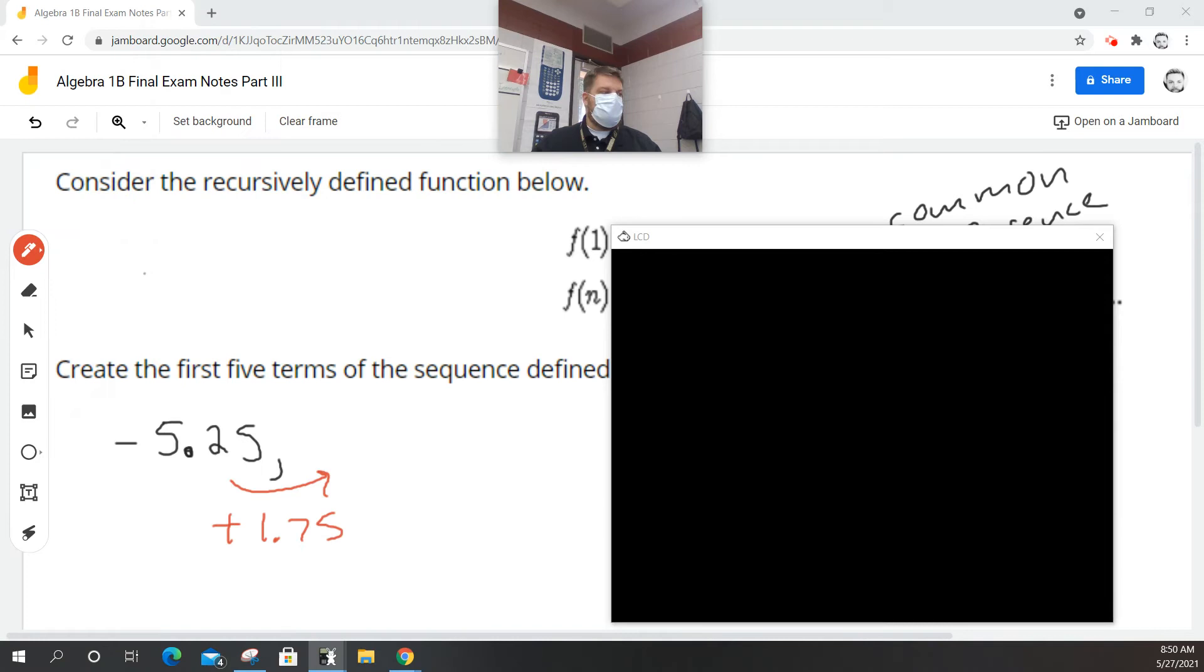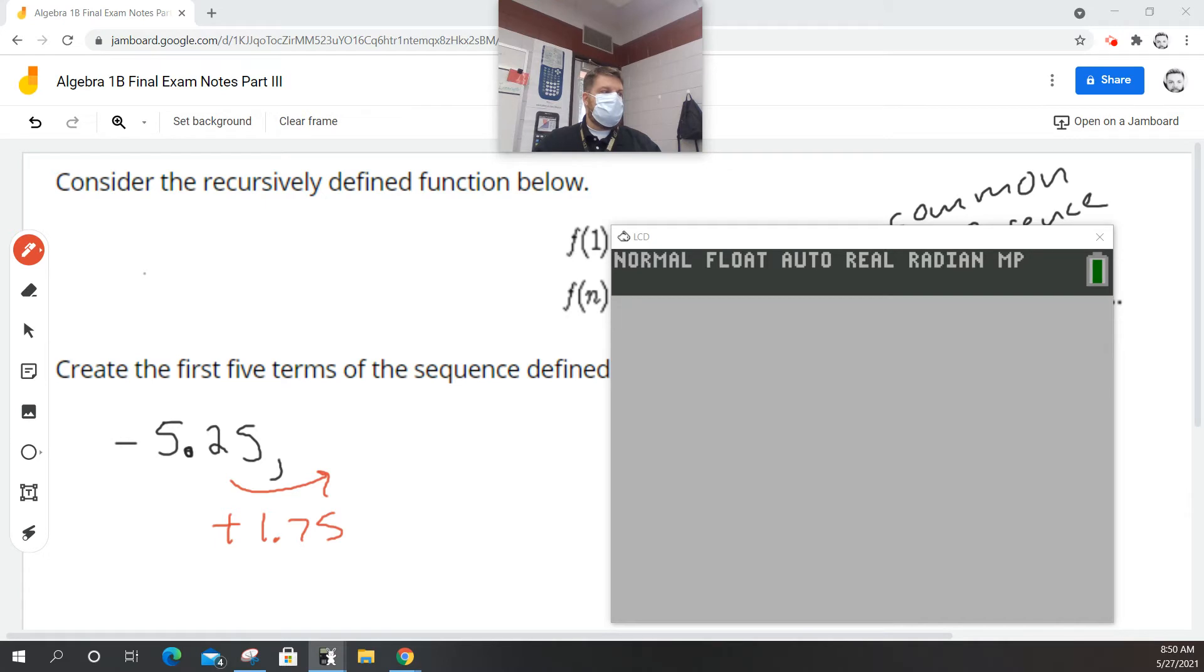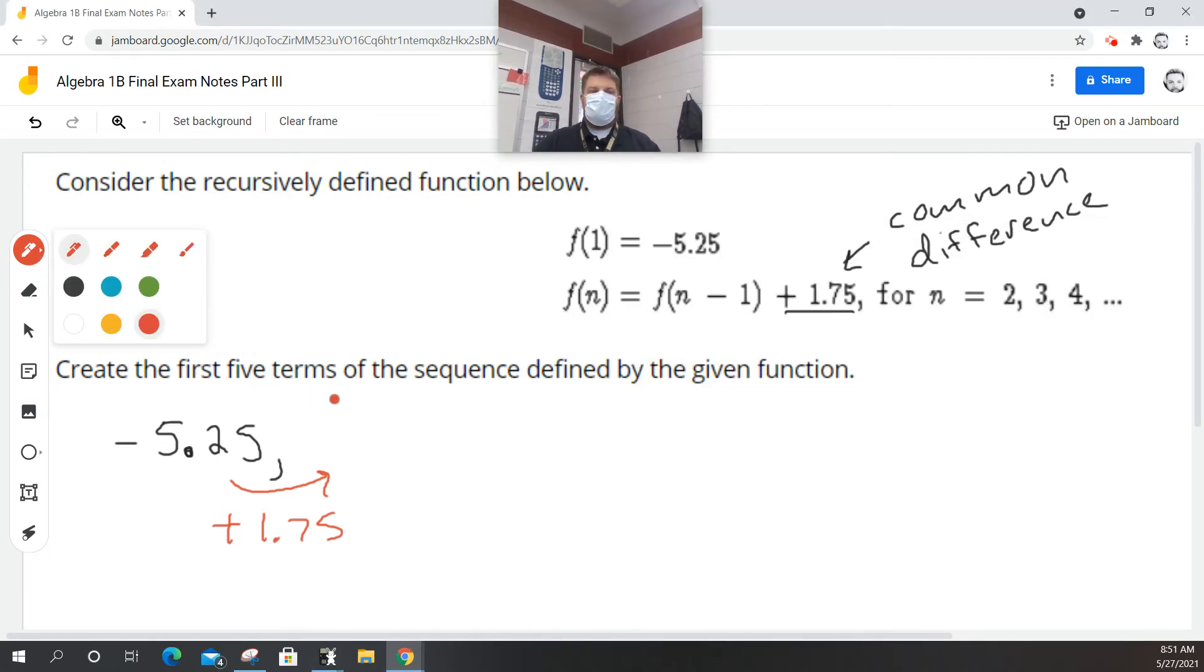I'm going to move this out of the way so you guys can see it on the screen. So I'm going to clear this problem out, and I'm going to say negative 5.75 plus 1.75. And I get negative 4. Oh, you know what? I put in the wrong number. It's negative 5.25 plus 1.75. So my next number then is just negative 3.5.